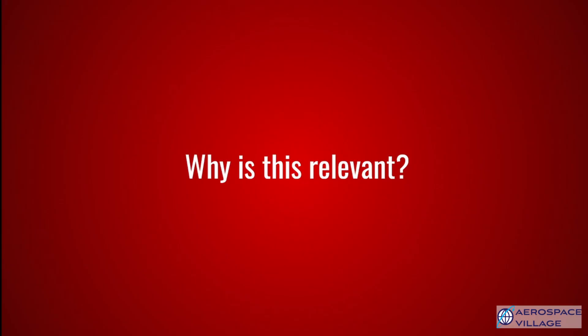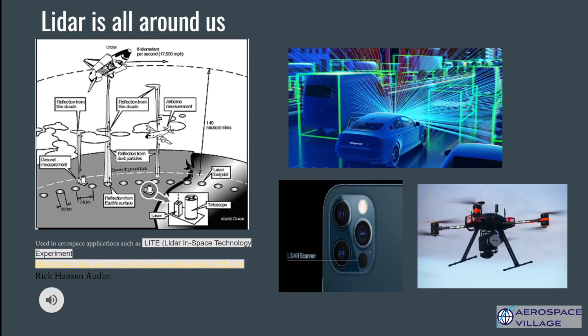Why is this relevant? In the last couple of years, we have seen a rise in autonomous vehicles, aircraft, and drones. Cars and drones are now using LiDAR, which uses infrared lasers to generate a 3D point cloud that lets the vehicle see a digital representation of its surroundings. LiDAR is being used in cars, drones, planes, phones, and it is even making its way into satellites to understand global climate and how it might be changing. Here is Professor Hansen explaining LiDAR in more detail.